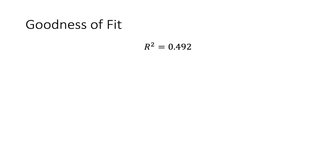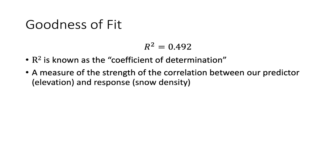So R squared is just a so-called goodness of fit measure. It represents how well, how strong the relationship is between two variables. It's formally known as the coefficient of determination. Very few people actually refer to it as the coefficient of determination colloquially. We just call it R squared. And it is a measure of the strength of the correlation between our predictor variable in that previous case, elevation and our response variable, snow density. And in this case, the value of R squared is 0.492.